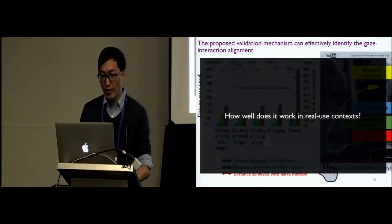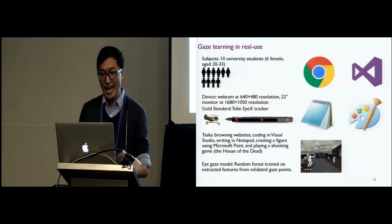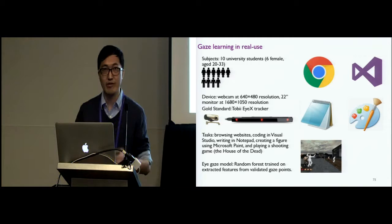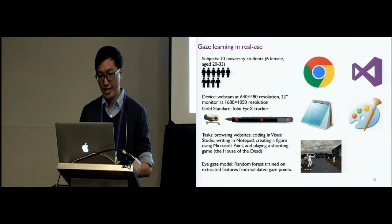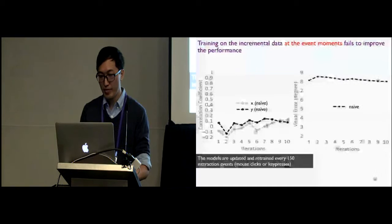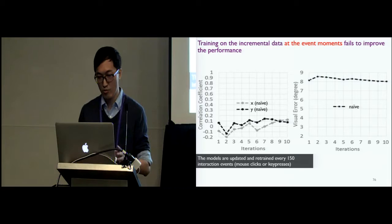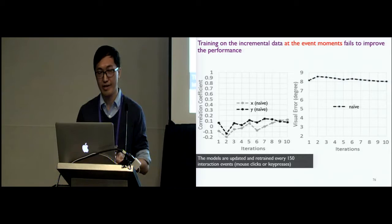But how well does it work in a real-use context? We recruited 10 subjects for a focus study. They were asked to work on several applications that will generate diverse range of interaction behaviors, such as browsing, coding, writing, drawing, and gaming. Our gaze model is a random forest. And this is the performance of our gaze model, if we use the naive people are looking at where they click assumption. The gaze model is updated and retrained every 150 interaction events.